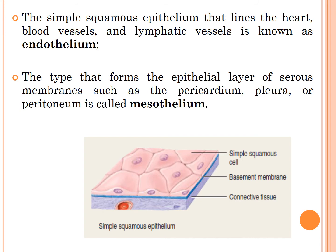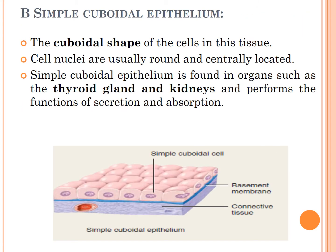The type that forms the epithelial layer of serous membranes such as the pericardium, pleura, and peritoneum is called mesothelium. In the figure of simple squamous epithelium, the nucleus is present in the center, cells are flat in shape, and there is a basement membrane beneath.